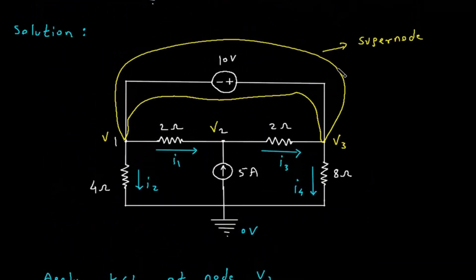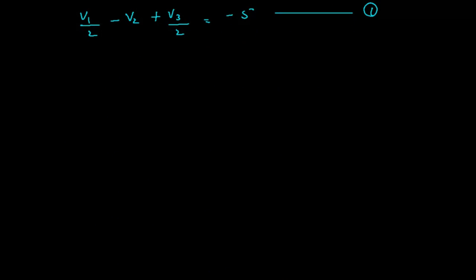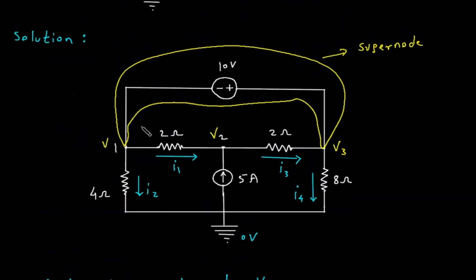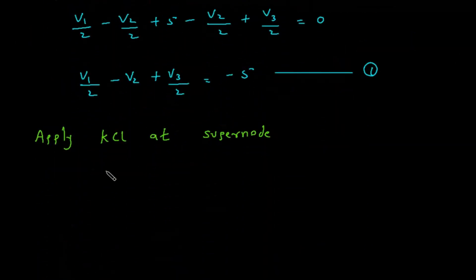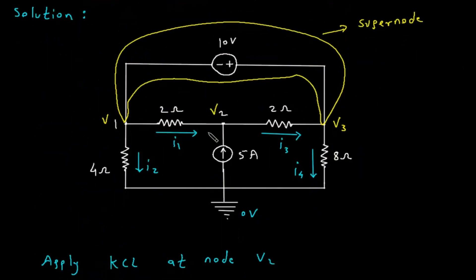Now we will apply KCL at the supernode. The only entering current at this supernode is I3. So I3 is equal to the leaving currents: I2 plus I1 plus I4.